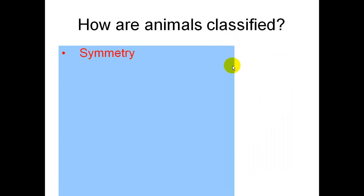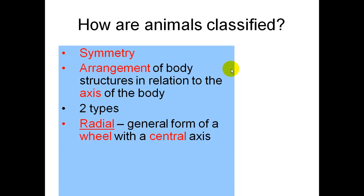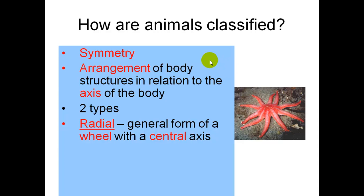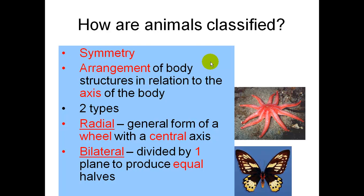Animals are classified based on symmetry, which is the arrangement of body structures in relation to the axis of their body. There are two main types: radial, which is the general form of a wheel with a central axis, and bilateral, where your body is divided by one plane to produce two equal halves.